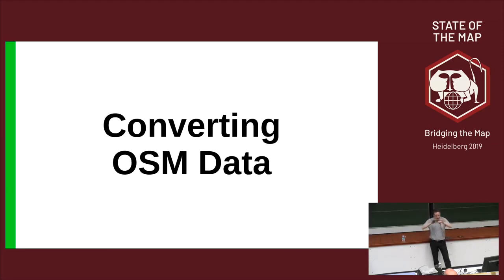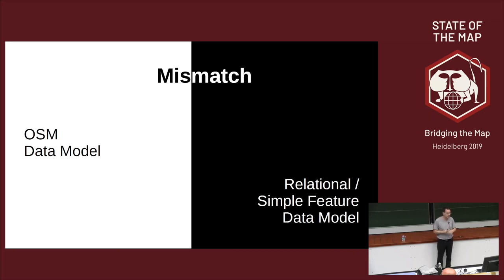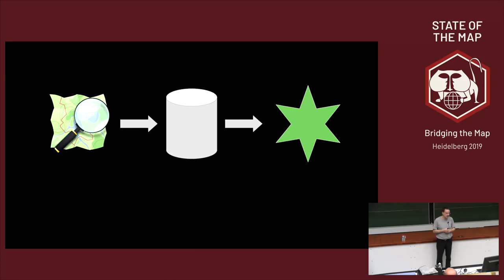Now that we know about the database and geometry, how do we get OSM data into the database? The OSM data model — nodes, ways, relations, and tags — doesn't always fit. There is a mismatch between the OSM data model and the relational data model that the database uses and the Simple Feature Model that PostGIS uses, so we need some kind of conversion.